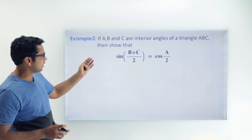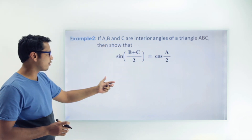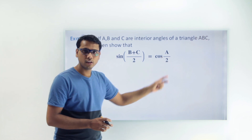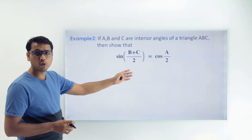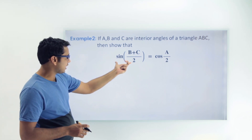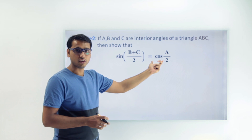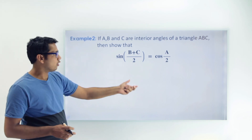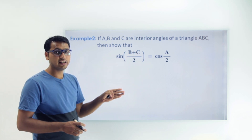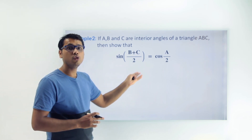The last example says: if A, B, C are interior angles of triangle ABC, we have to prove that sin((B + C)/2) = cos(A/2). If you look at what we have to prove, the left hand side is the complementary of the right hand side trigonometric function — sin is complementary of cos. So if we somehow change the angle (B + C)/2 into the form of 90 degrees minus its complementary, then sin will be converted into cos.